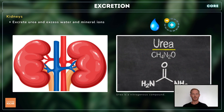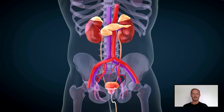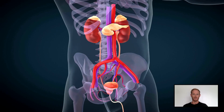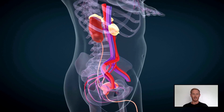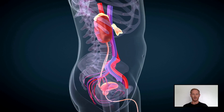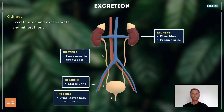The kidneys are responsible for excreting a toxic substance called urea as well as excess water and ions taken in with the diet. They're located either side of the spine and filter the blood, removing all of the urea and some of the water and ions. These substances are transported to the bladder in the form of urine through tubes called ureters. Urine is stored in the bladder and excreted through another tube called the urethra.